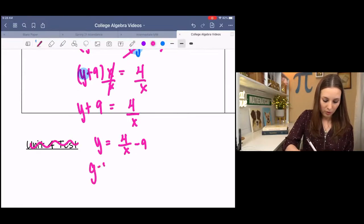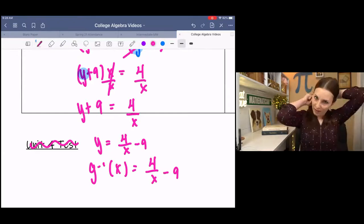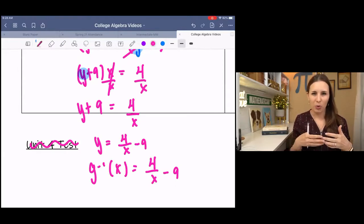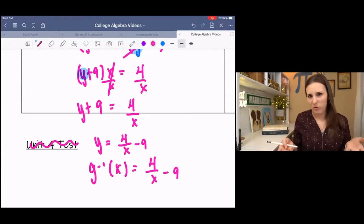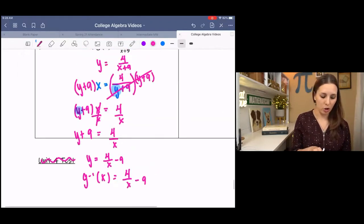And now I have my inverse function. So the inverse of g is 4 over X minus 9. Done. So it's just solving. It's not really necessarily anything new. The concept of switching X and Y and finding the inverse is new. But we're really just solving. We're solving for variables, which we've done like 100 times.